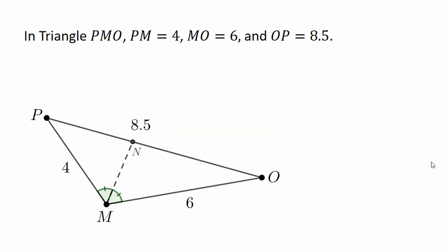Okay, so let's do this. Here's an example. In triangle PMO, PM equals 4, MO equals 6, and OP equals 8.5. Segment MN bisects angle PMO. Find the lengths of PN and ON.